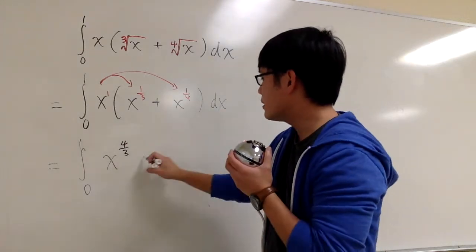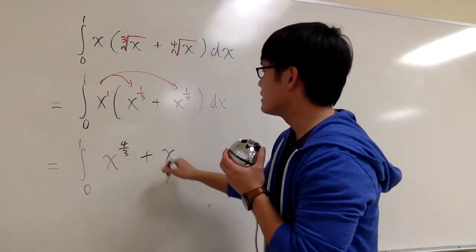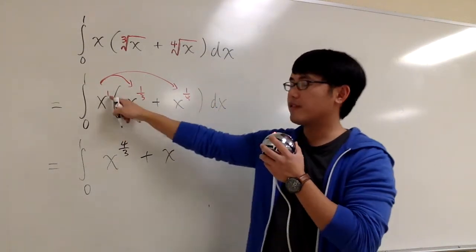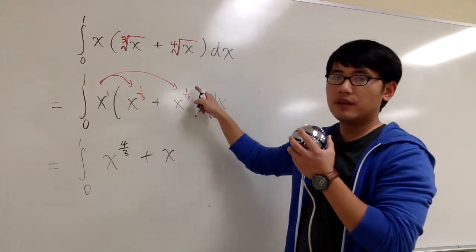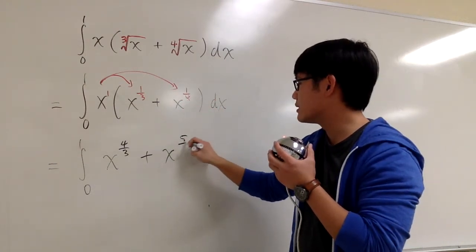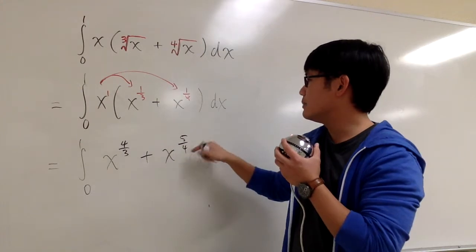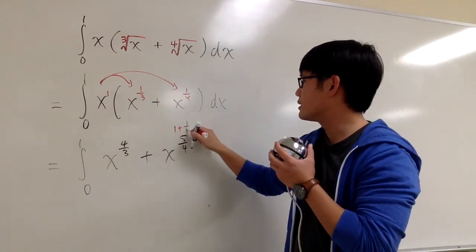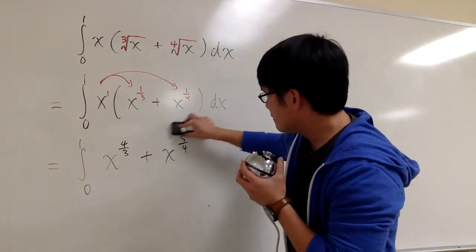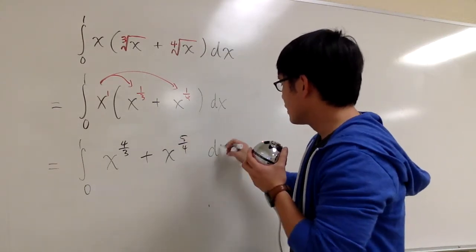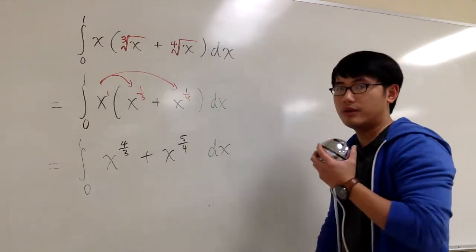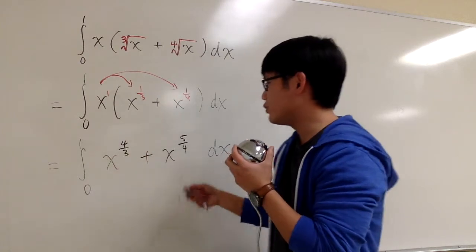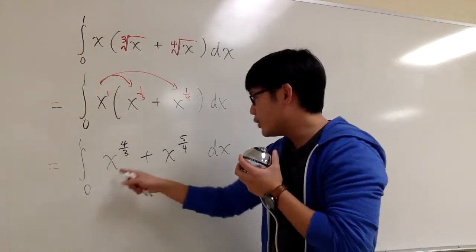And then do the same right here, plus we have the x. This is x to the first, times x to the 1 fourth. So this is like 4 fourths plus 1 fourth. We get 5 fourths. This is because we have the 1 plus the 1 fourth. And that's all the algebra that we can do for now. We can put parentheses, or maybe not, doesn't really matter. But then we are ready to go.